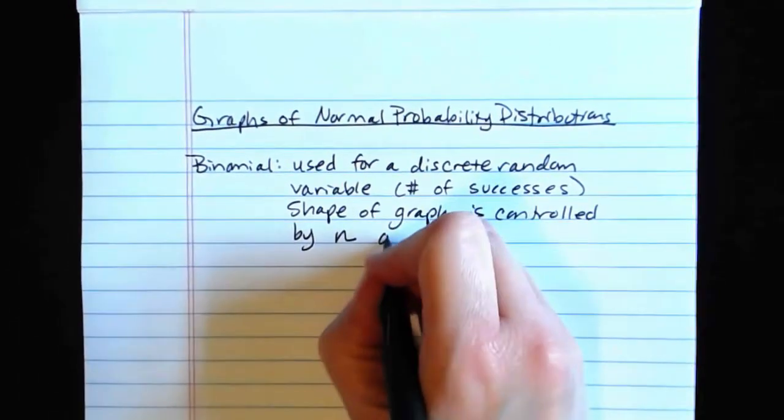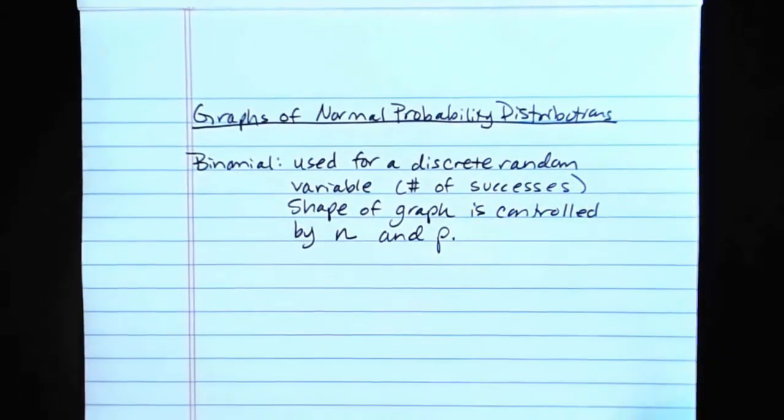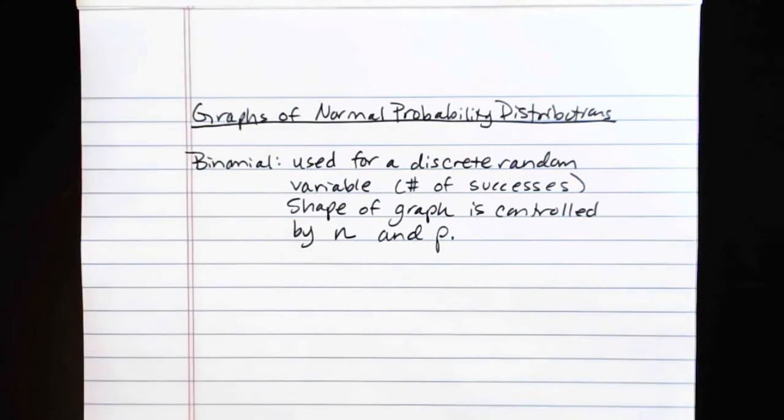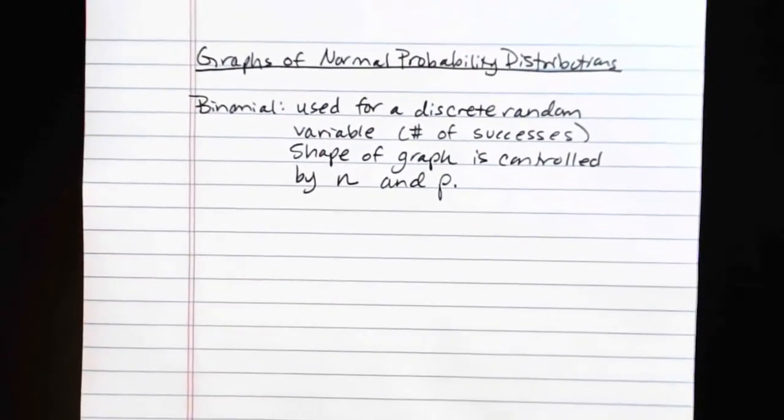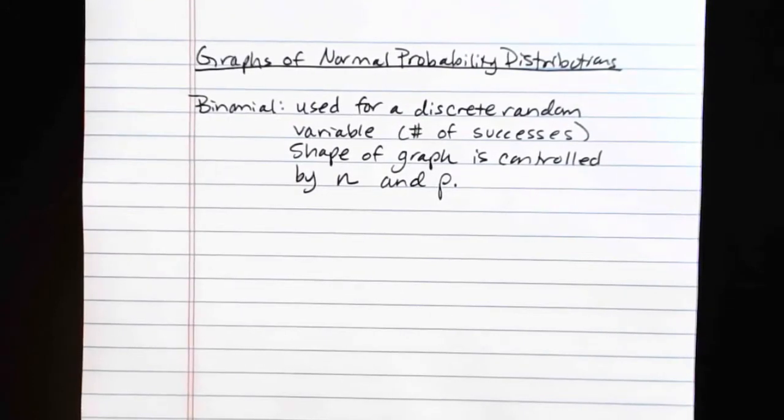The shape of the overall graph is controlled by n, the number of trials, and lowercase p, which is the probability of success on any given trial. So those two values together control the shape of the graph of a binomial probability distribution.